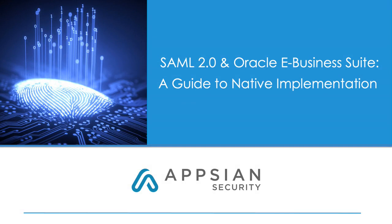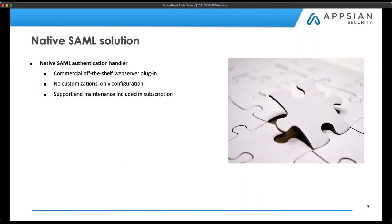Welcome to AppSian's webinar on SAML 2.0 and Oracle eBusiness Suite. What we have is a native SAML solution. Through our application security platform, we communicate directly to the identity provider, allowing us to communicate out from EBS to the identity provider to verify that authentication attempt so users are able to access the system. We handle all of that for you with just a little configuration, and support and maintenance is included from us as the vendor.